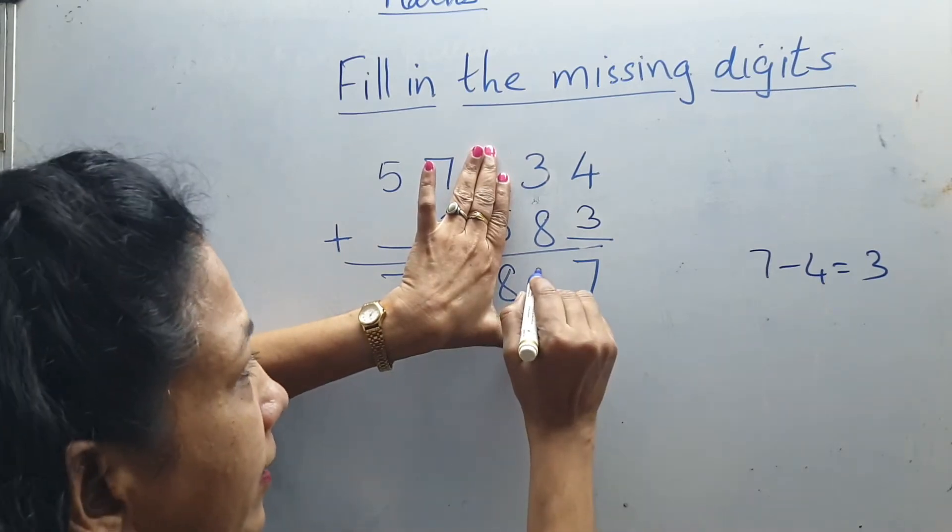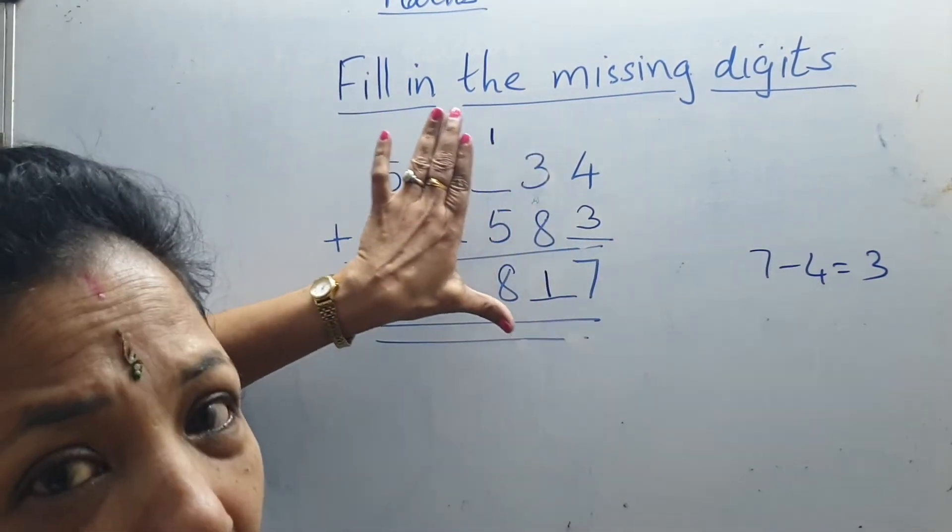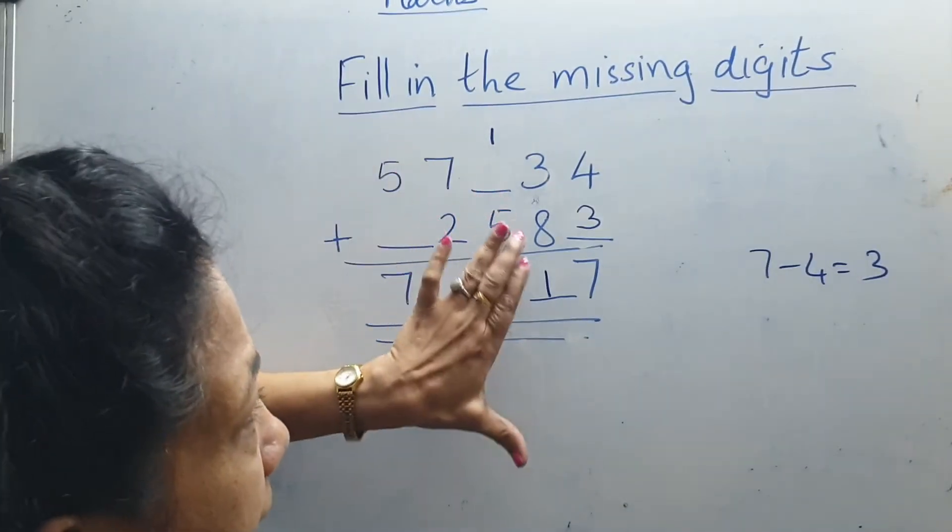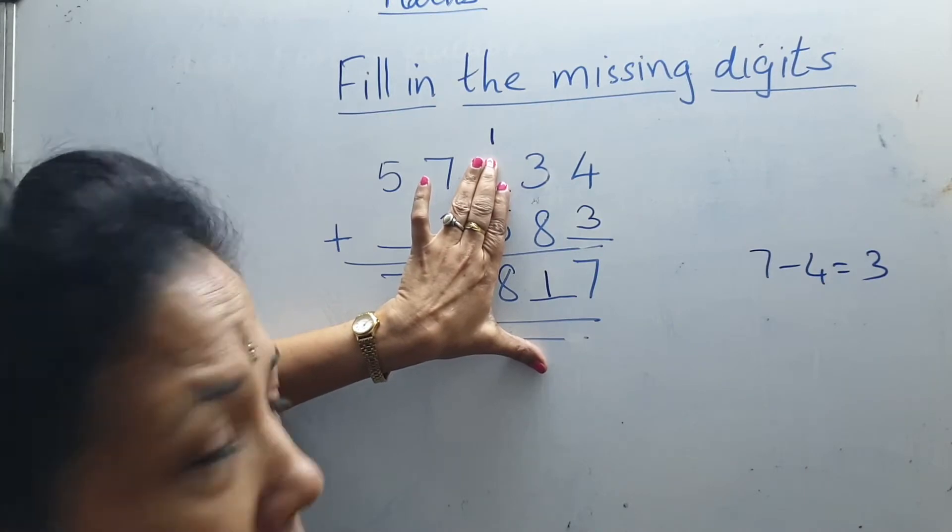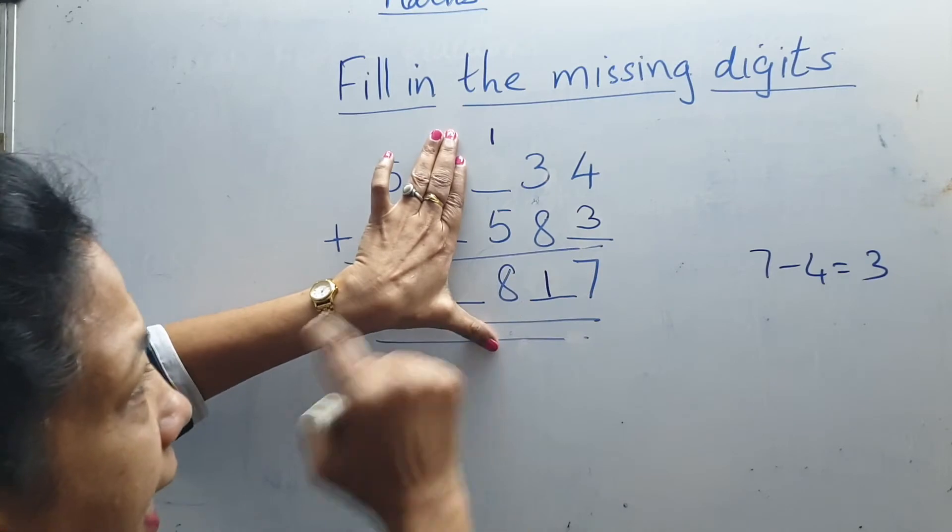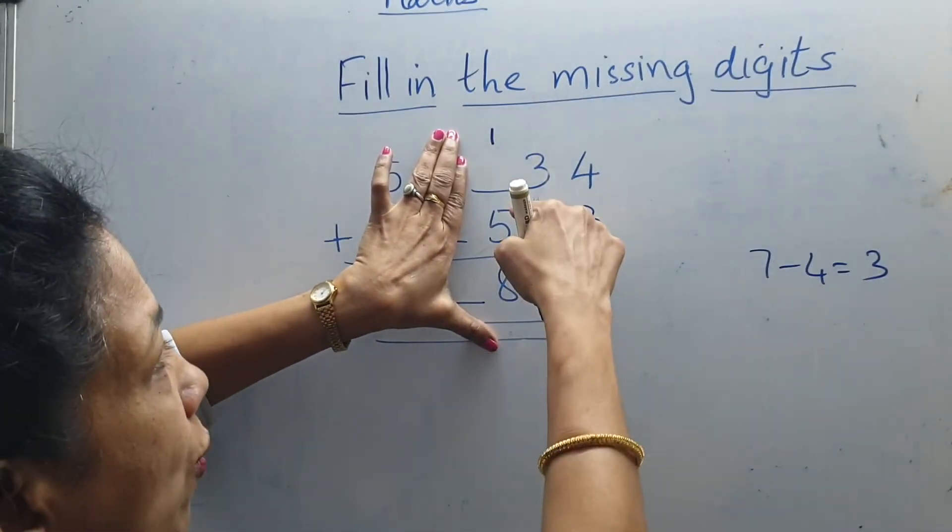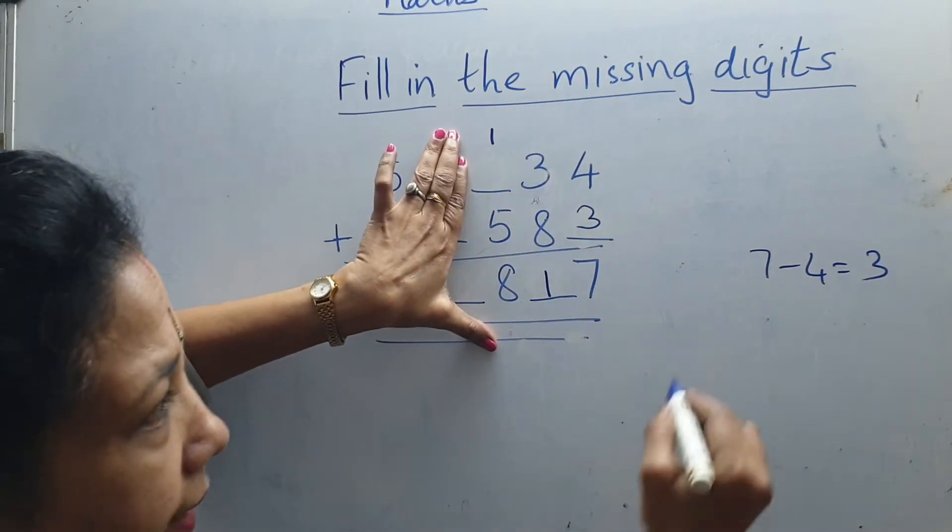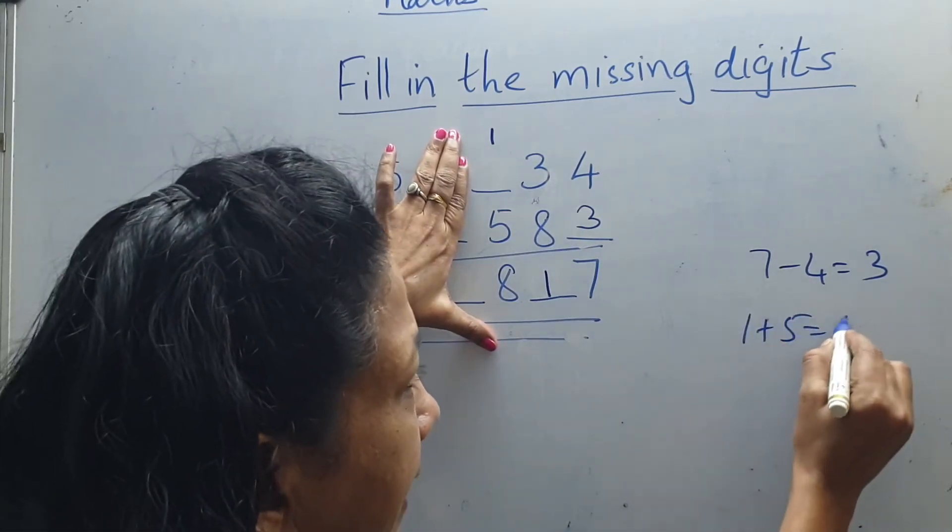So 1 carry and 1 will be in the down. Now next number given 1_5 8. 1_5 8. So 5 plus 1 we are getting. What is 5 plus 1? 1 plus 5? 6.